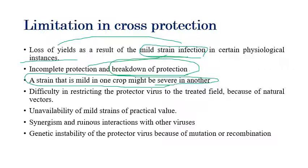There is difficulty in restricting the protector virus to the threatened field because of natural vectors that transport it from one area to another. Insect vectors feeding on mild-strain-infected plants may then feed on other plant species where the mild strain becomes severe, creating additional dangers.